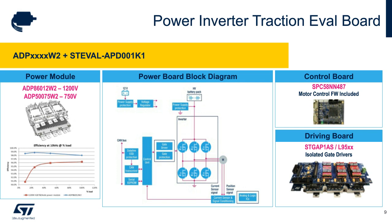The system to be tested is comprehensive — it also includes the gate driving board, which you can see on the right, with six isolated gate drivers that are press-fitted on top of the power module and handle the driving of the power switches, including safety features which are embedded in the STDRIVE and L9915 drivers. On top, there is the microcontroller board and the DC-DC power supply. The microcontroller board has a microprocessor that handles the firmware for the motor control.